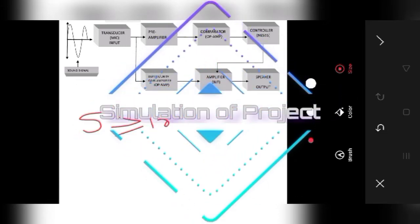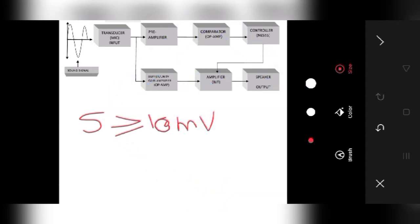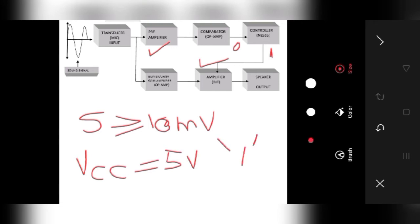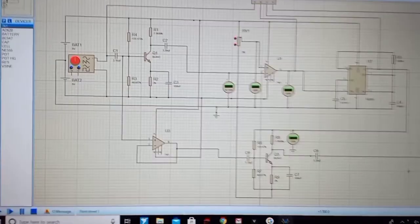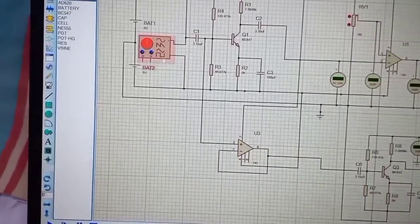If the signal is greater than or equal to 10mV, the pre-amplifier will amplify the signal, and the comparator will give logic 0 at its output. Due to this, the controller gives logic 1 (inverted output) at its output, so the VCC for the amplifier is now 5 volts. The amplifier works, the signal is amplified, and we can hear the surrounding sound. This is how we made an automated hearing aid using these components.